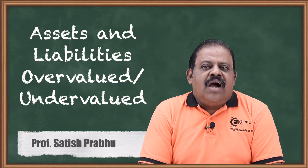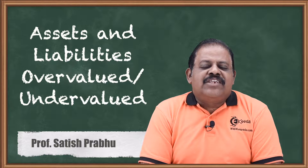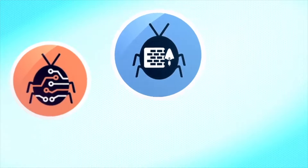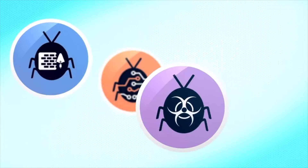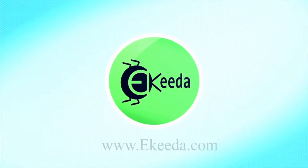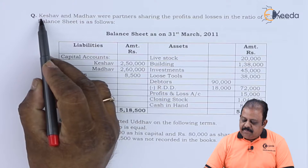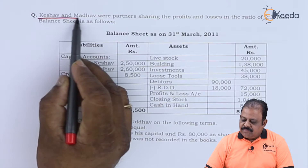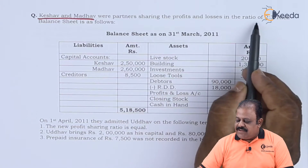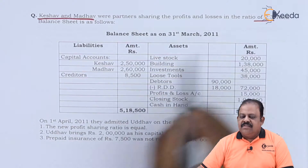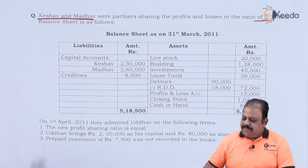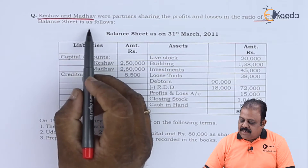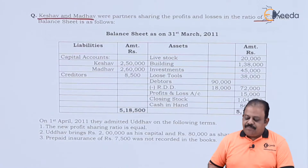We will understand how to solve such adjustments through this question. Keshav and Madhav were partners sharing profits and losses in the ratio of 2:3. Their balance sheet is as follows.